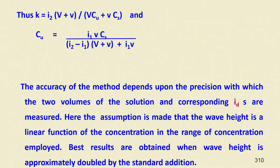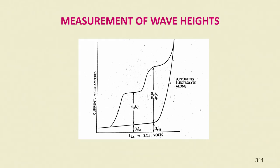Best results are obtained when the wave height is approximately doubled by the standard addition. This is the wave height measurement approach: from a polarogram showing the residual current, a tangent is drawn, identifying the first ion and then the first ion plus second ion regions.